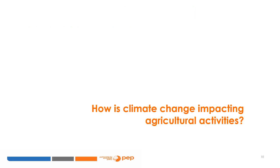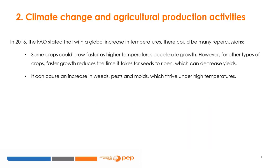In view of the above-mentioned climate change events, one can only wonder how climate change is impacting agricultural activities. According to the FAO from 2015, an increase in temperatures can encourage some crops to grow faster, as higher temperatures accelerate growth. However, for other types of crops, faster growth reduces the time it takes for seeds to ripen, which can decrease yields. It can also encourage an increase in weeds, pests, and mold, which thrive under high temperatures.